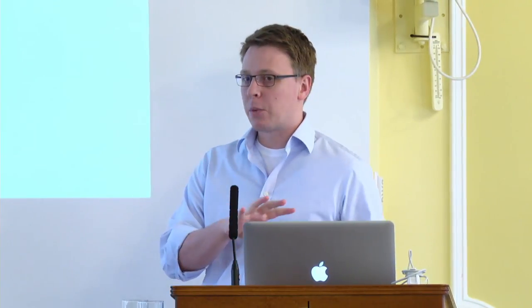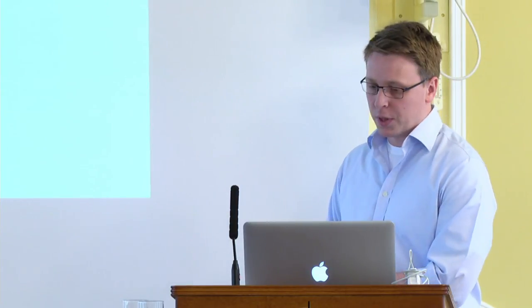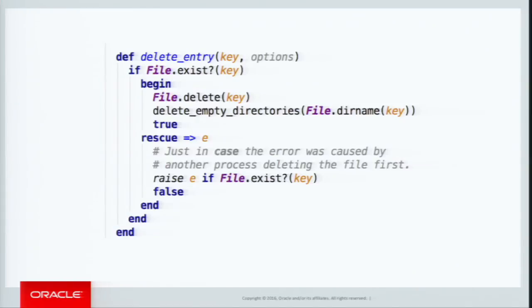Ruby is very much a batteries-included language. You get quite a large standard library, in contrast to languages like JavaScript. It's more like Python, where you get lots of features and libraries built in, usually shipped as part of the implementation. Those libraries do lots of important things. Rails is the big Ruby web framework that lots of people use — to a lot of people, Ruby is Rails, that's how important it is.